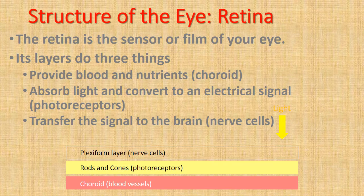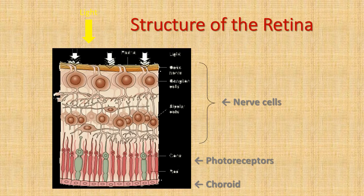The retina is the sensor or film of your eye. Its layers do three things: provide blood and nutrients via the choroid, absorb light, and convert light to an electrical signal via the photoreceptors.